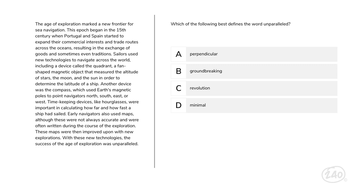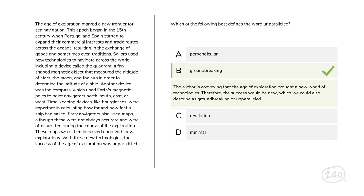Now let's look at a vocabulary question: which of the following best defines the word 'unparalleled' — perpendicular, groundbreaking, revolution, or minimal? Remember, context matters. Think to yourself where was 'unparalleled' used and why did the author use it? Choice B — groundbreaking — is the best. Overall, the author is conveying that the age of exploration brought a new world of technologies, so the success would be new and groundbreaking — unparalleled.